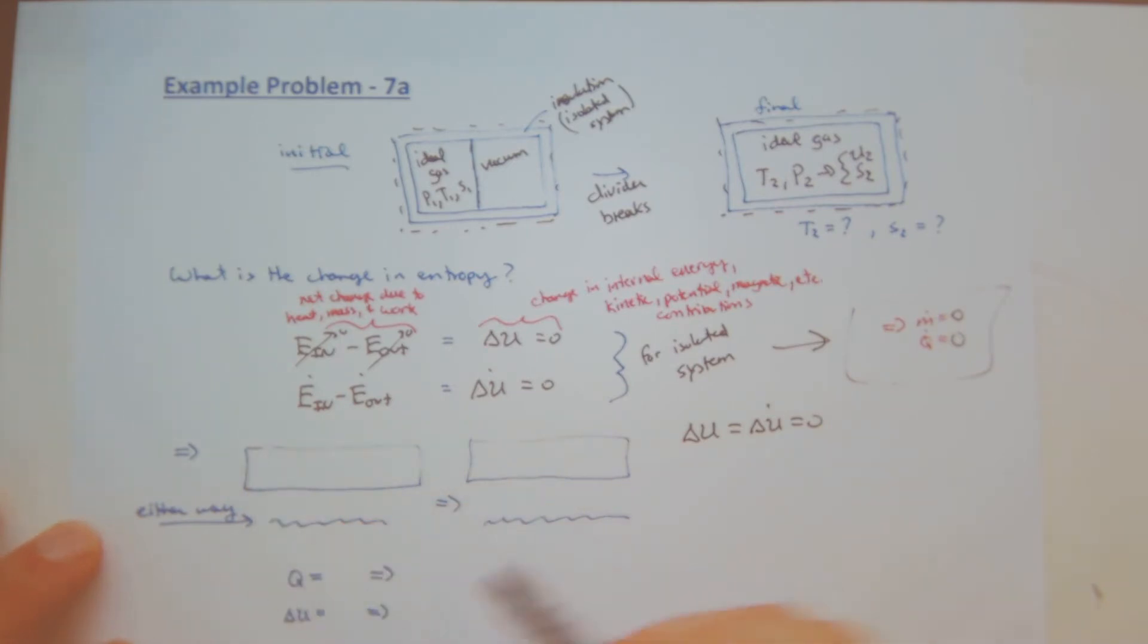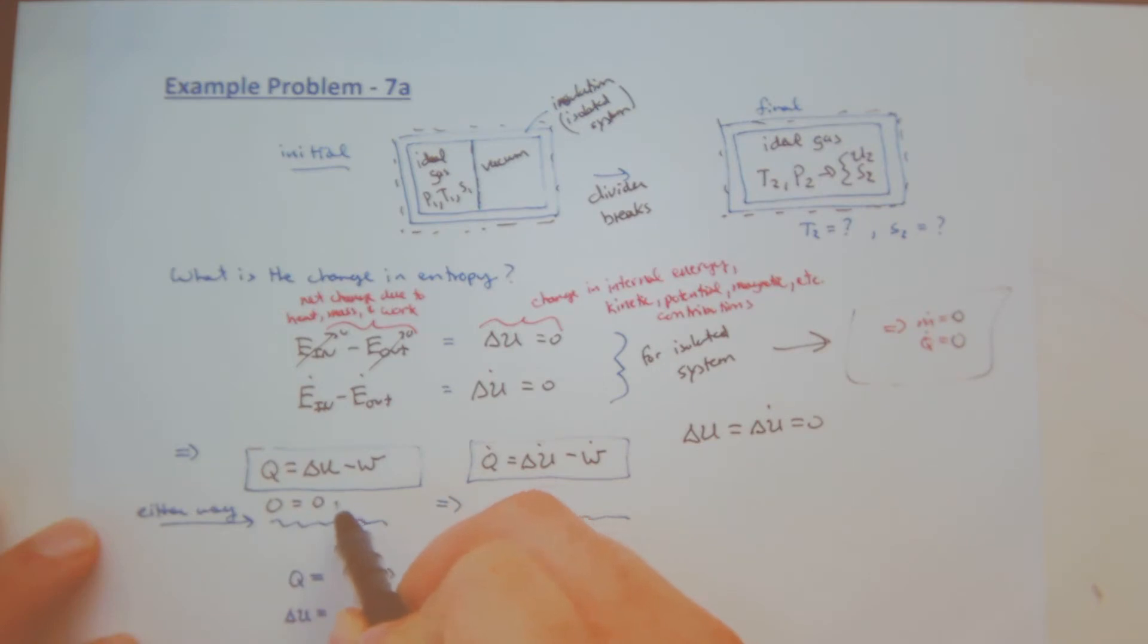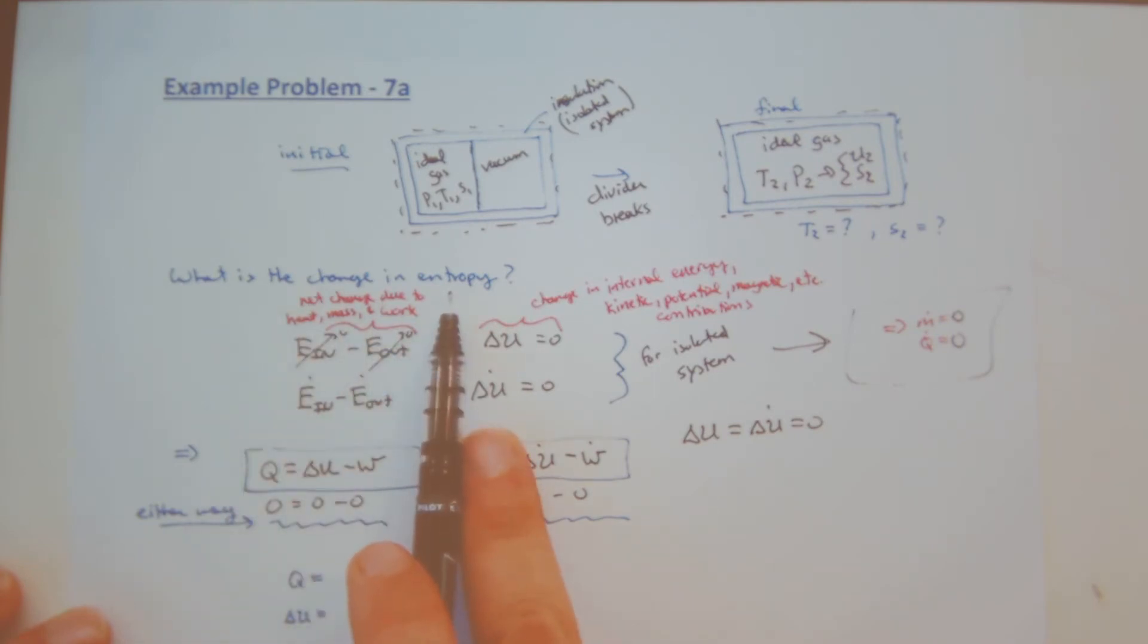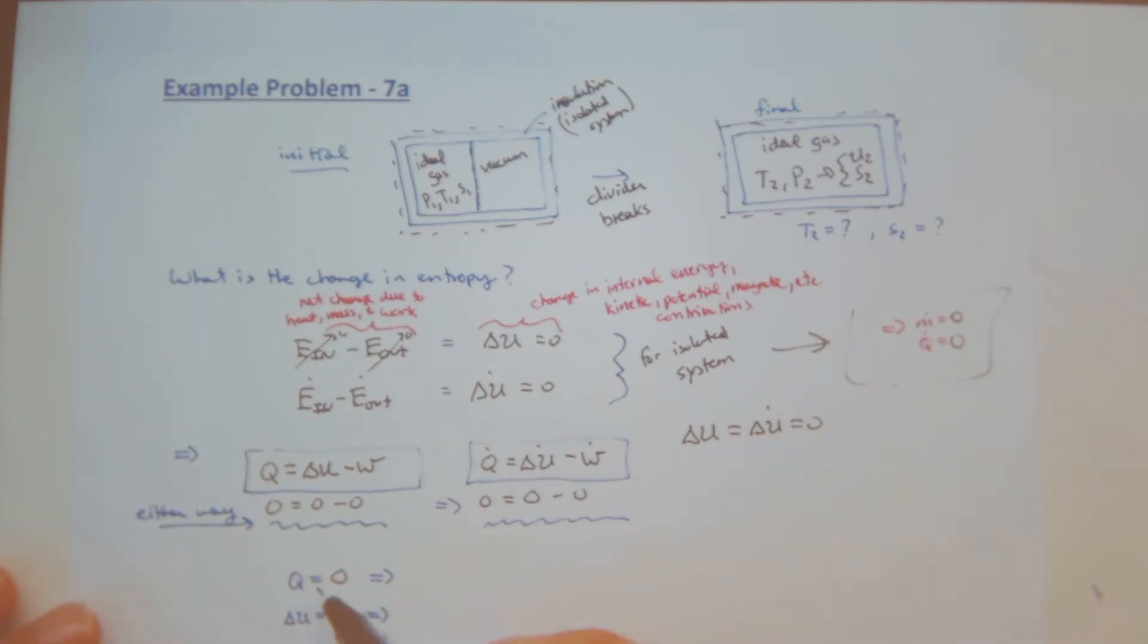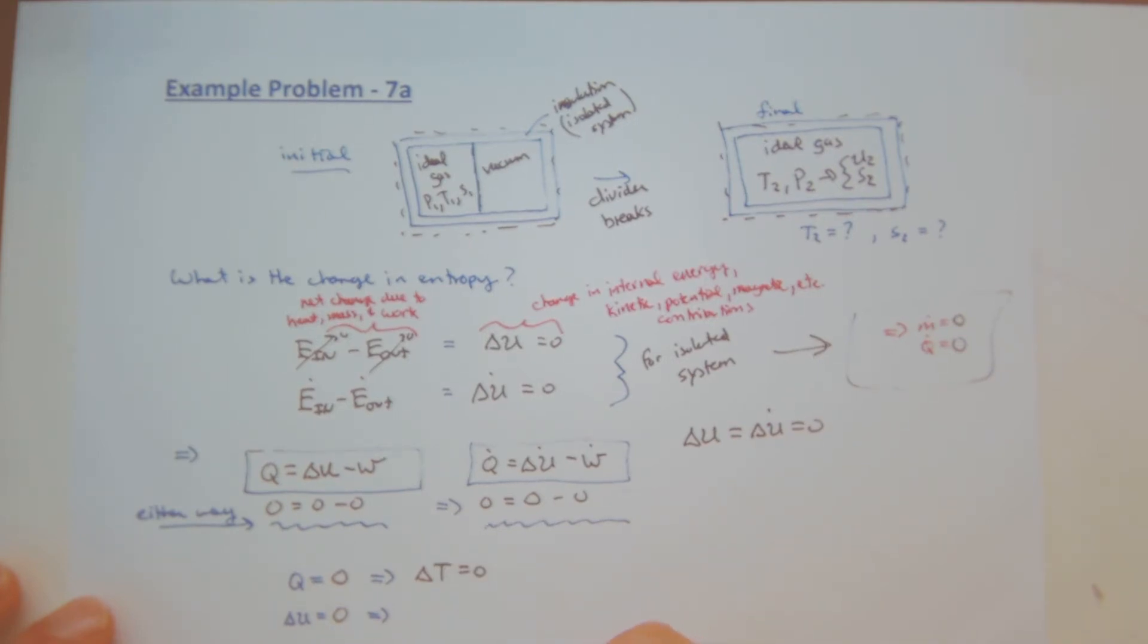I can do it a different way. I can say Q is equal to delta U minus W, or Q dot is equal to delta U dot minus W dot, and I have zero equals zero minus zero, and likewise zero equals zero minus zero. So either way I end up getting the same thing. But nevertheless, I went about - I still want to find out what is my change in entropy, but I did this. By going through energy balance, I just basically proved to myself that delta U is equal to zero and that heat transfer is equal to zero. So given that delta Q is equal to zero, I know that delta T is equal to zero, or likewise I can say the same thing, which implies that T2 equals T1.